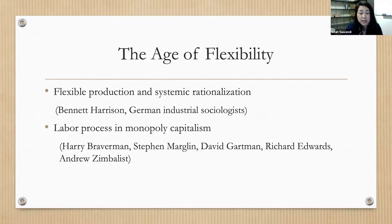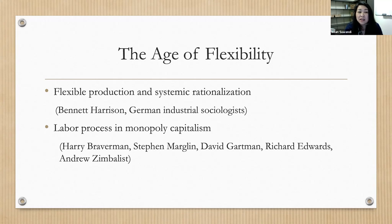Multinational companies search for lower unit labor costs in the global south. Radical and critical scholars have talked about this by pointing out the nature of global production — namely, flexibility, or flexible production. Scholars like Bennett Harrison in 'Lean and Mean' discuss flexible production, and German industrial sociologists discuss systemic rationalization. I also combine this literature with the labor process literature on labor process in monopoly capitalism, much of which is Marxist.